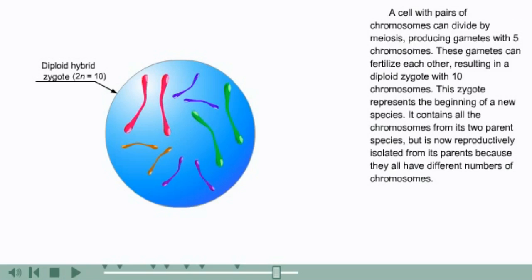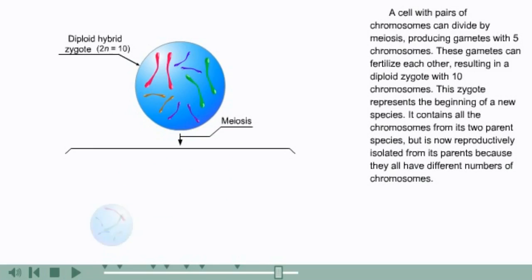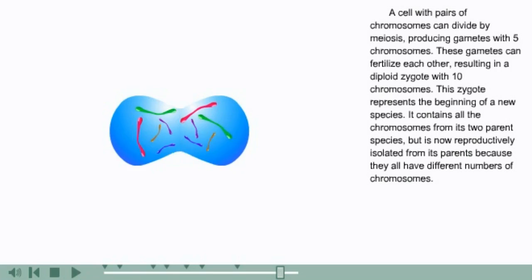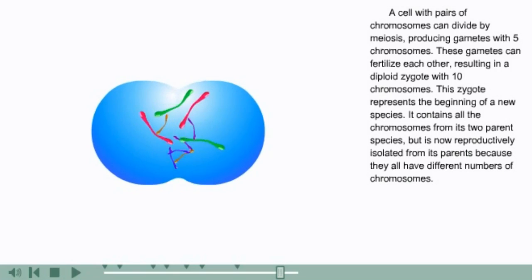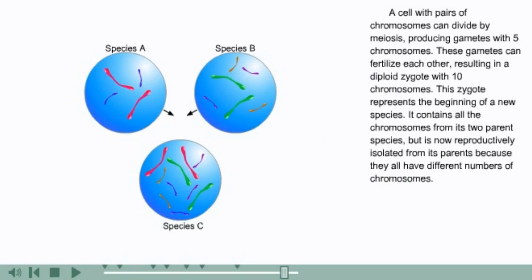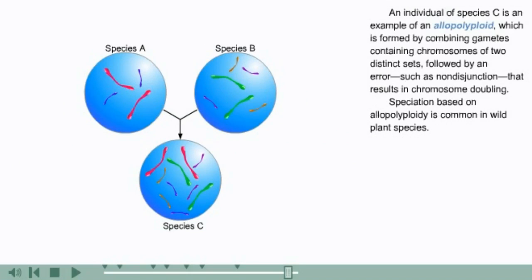A cell with pairs of chromosomes can divide by meiosis, producing gametes with five chromosomes. These gametes can fertilize each other, resulting in a diploid zygote with ten chromosomes. This zygote represents the beginning of a new species. It contains all the chromosomes from its two parent species but is now reproductively isolated from its parents because they all have different numbers of chromosomes.